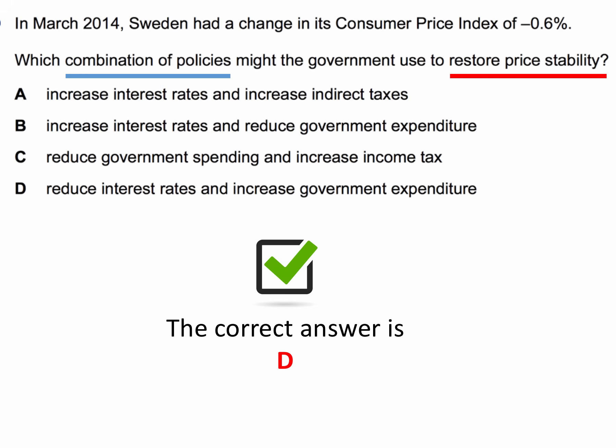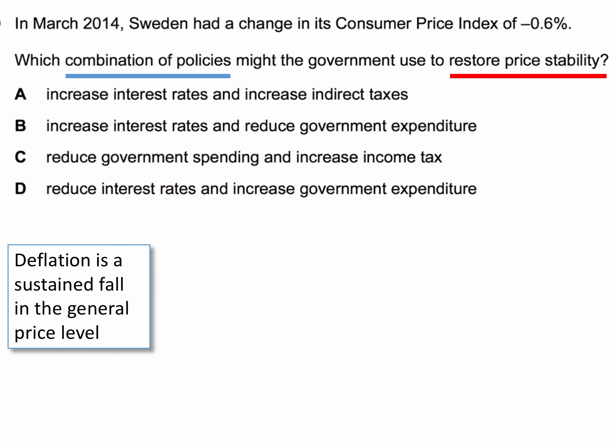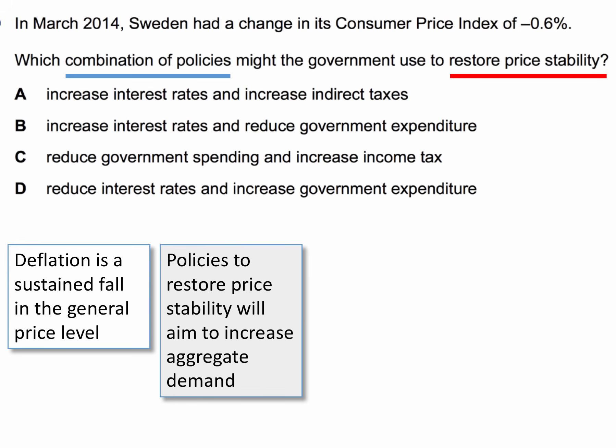Deflation is defined as a sustained fall in the general price level. Sweden in March 2014 was experiencing deflation, so this question asks you to pick out policies that will restore price stability. The way to do that is to increase the level of aggregate demand relative to the supply-side capacity of the economy.